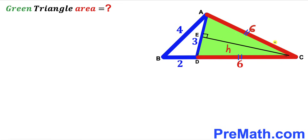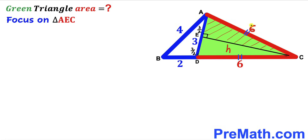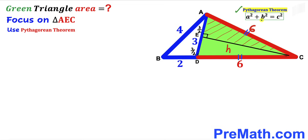Since triangle ACD is isosceles with perpendicular CE, segment AE equals segment DE. The whole AD length is 3 units, so AE equals 3 divided by 2, and DE is 3 divided by 2 as well. Now we focus on this right triangle and apply the Pythagorean theorem to find the value of height h.